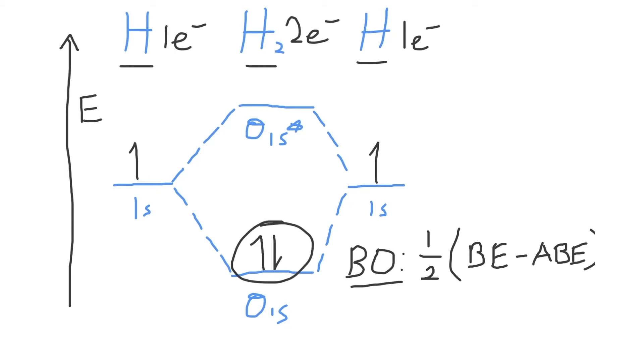The bonding electrons are in the sigma 1s molecular orbital and the antibonding electrons are in the sigma 1s star antibonding molecular orbital. So bond order will equal one half times the bonding electrons, of which there's two, minus the antibonding electrons, of which there's none.